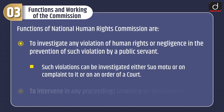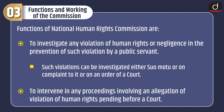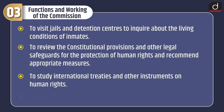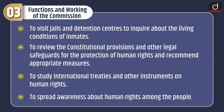The functions of the National Human Rights Commission include: to investigate any violation of human rights or negligence in the prevention of such violation by a public servant — such violations can be investigated either suo motu, on complaint, or on an order of a court — to intervene in any proceedings involving an allegation of violation of human rights pending before a court, to visit jails and detention centers to inquire about the living conditions of inmates, to review constitutional provisions and other legal safeguards for the protection of human rights and recommend appropriate measures, to study international treaties and other instruments on human rights, and to spread awareness about human rights among the people.